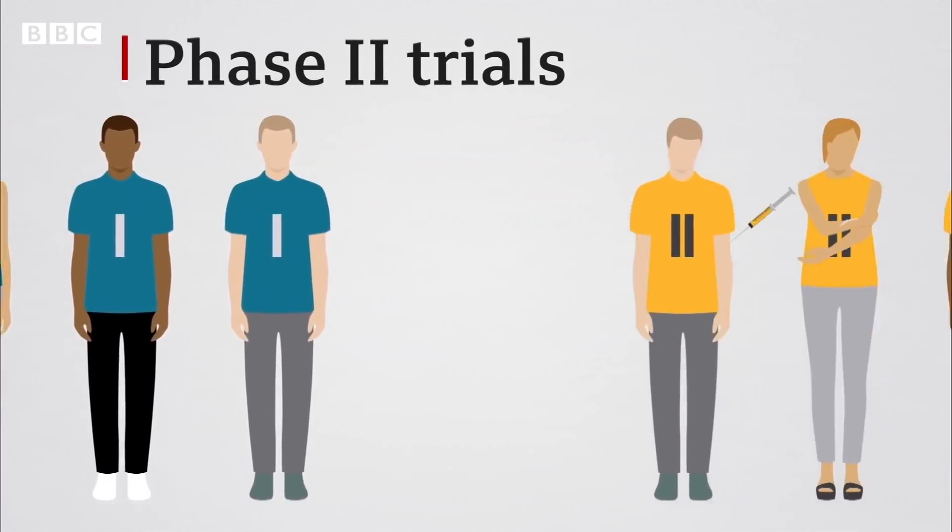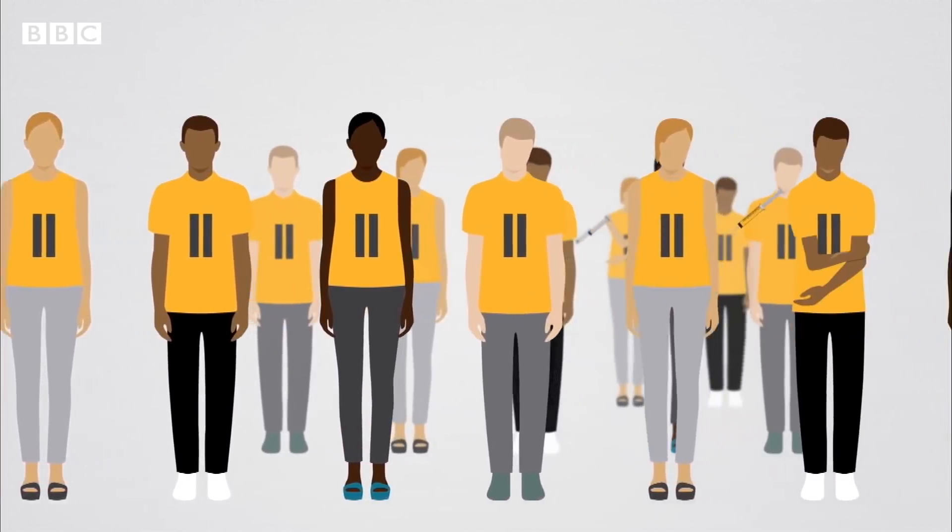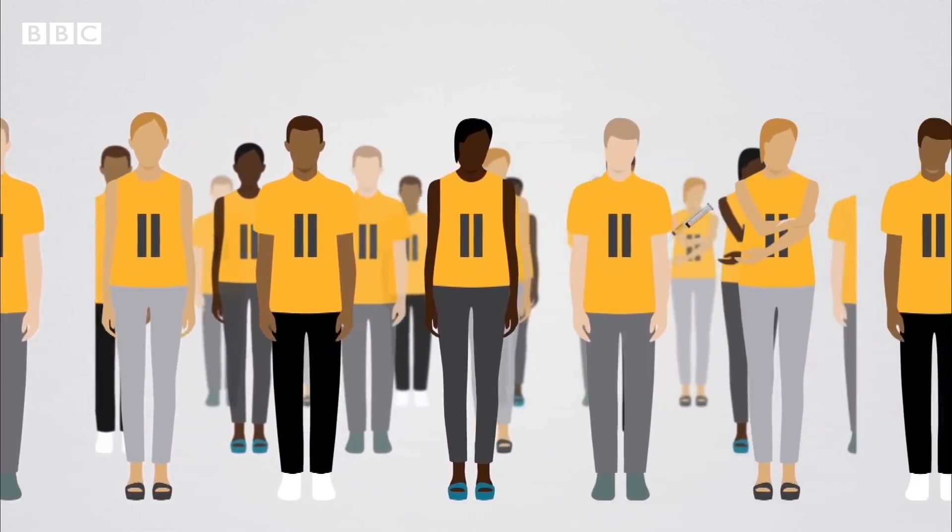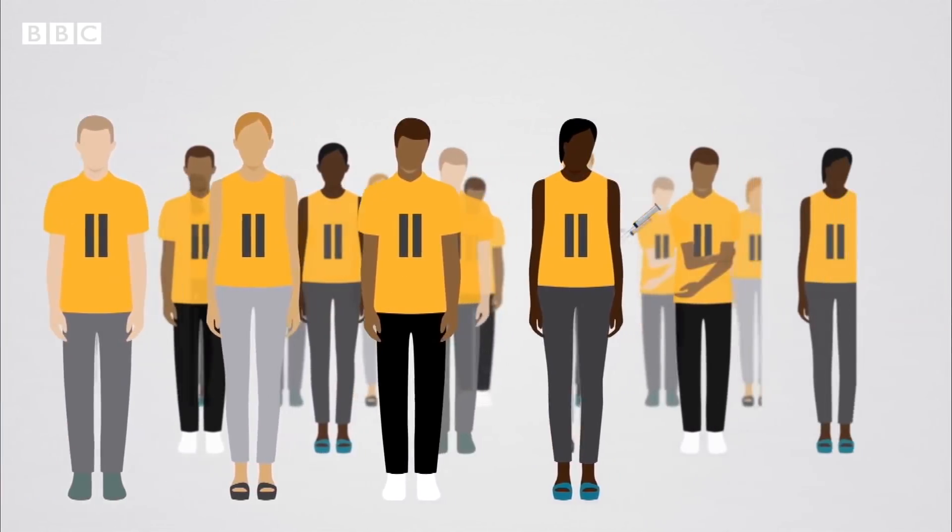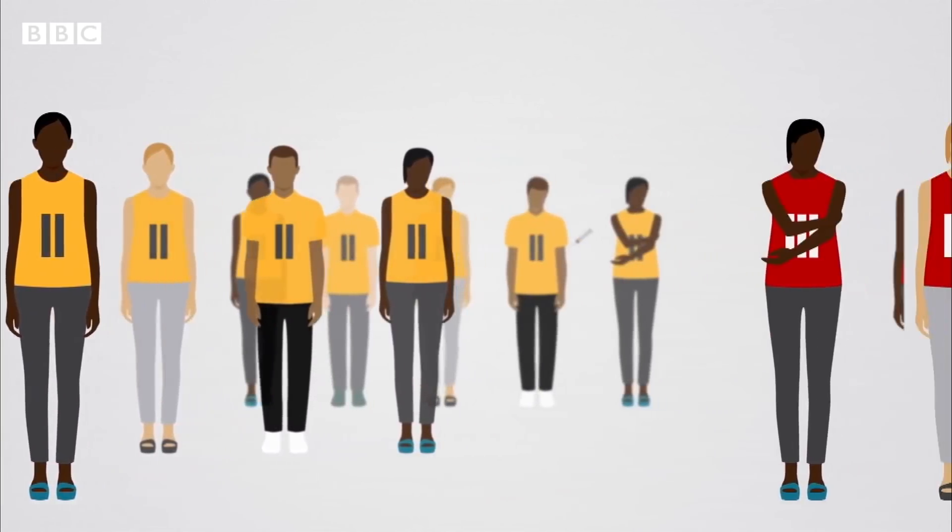Phase two trials involve several hundred volunteers and look at how effective a vaccine is in humans. This group involves adults of all ages and sexes and ideally all ethnicities.